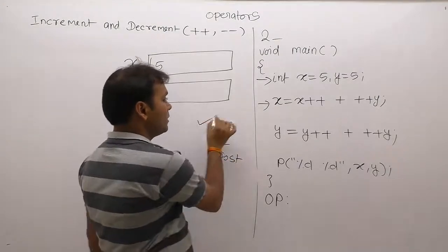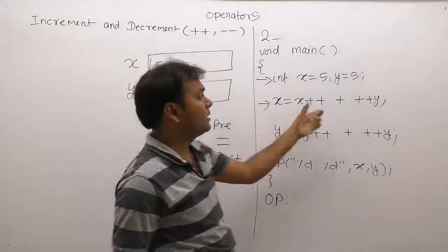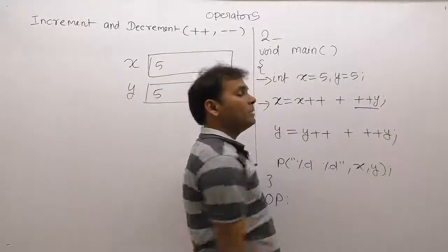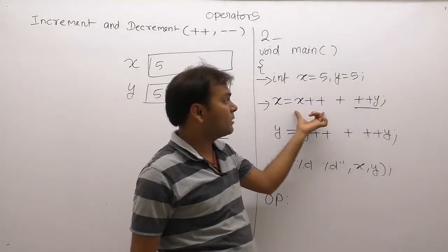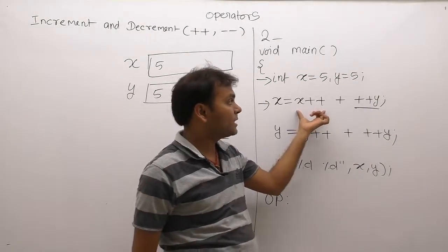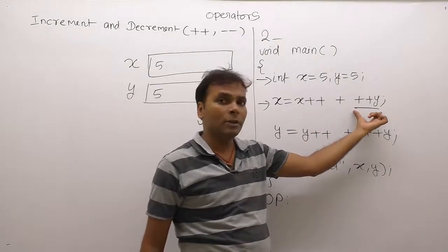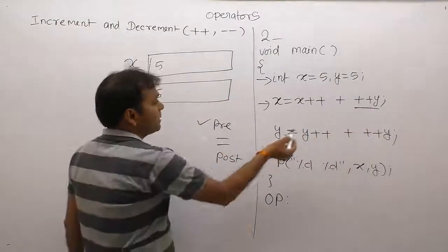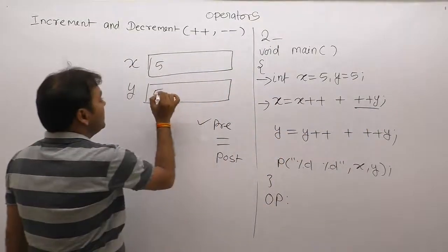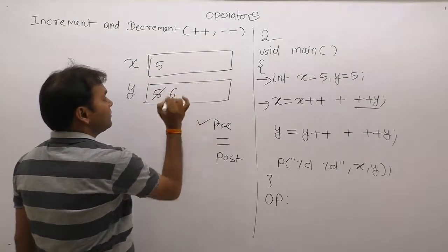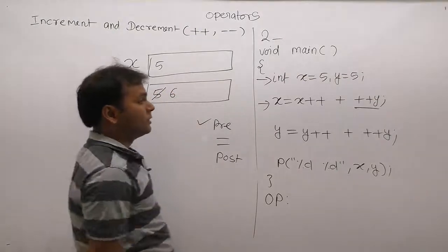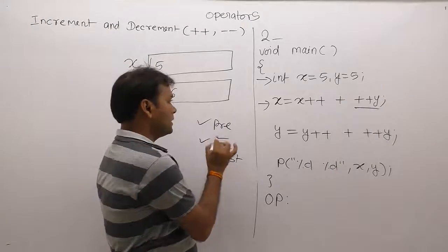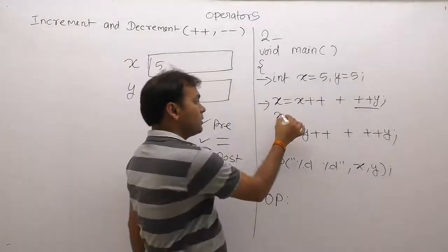First of all, for the pre-increment step: how many pre operations are there? Only one pre-increment. Which variable gets the pre-increment? It is applied to y. So y is incremented — y becomes 6. This is the value of y after the pre step. The second operation is assignment.